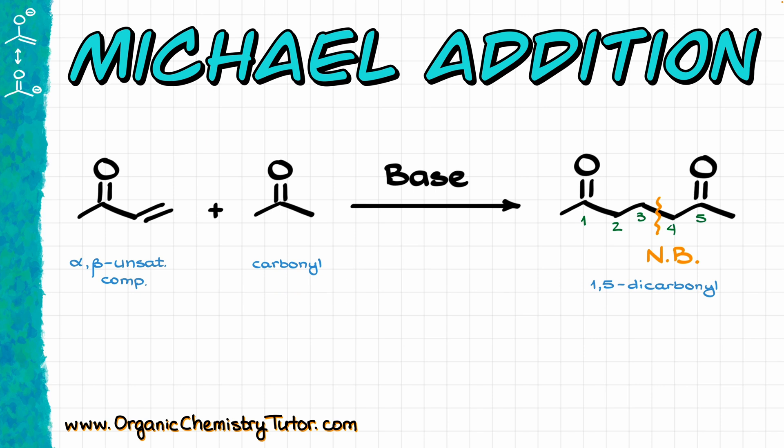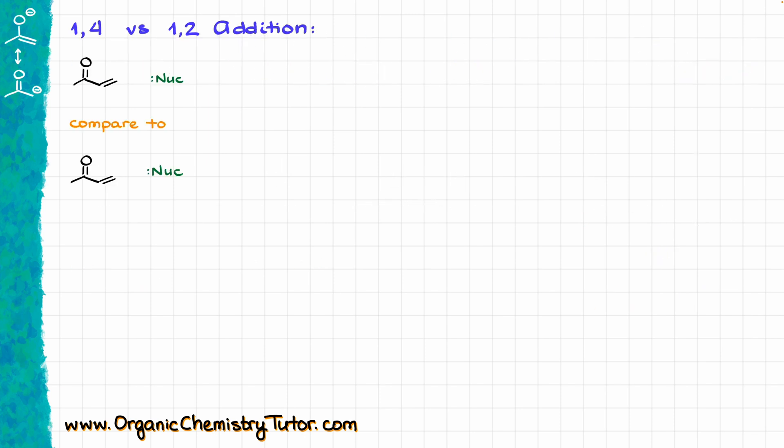As a result of this reaction, we are typically going to be seeing the formation of the 1,5-dicarbonyl, which can be a diketone or maybe an ester of some sort. And before we go into the details of the Michael addition mechanism, let's look at the two different types of nucleophilic attack that the alpha-beta unsaturated compounds can exhibit.